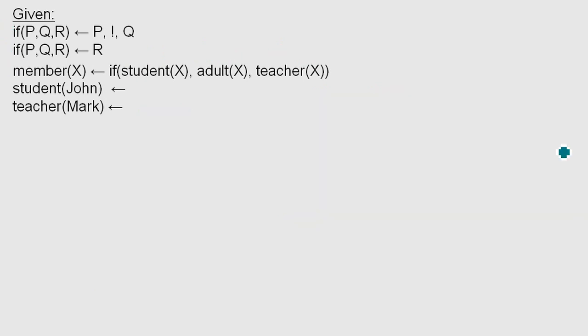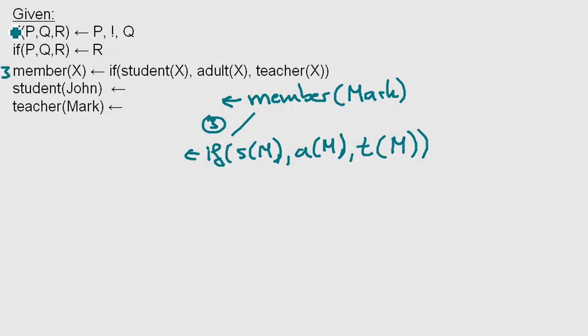Let's try the same example with Mark. We ask, is Mark a member? Once again, we apply this rule number three. And we again end up with this. Again, we now apply rule number one. And again, we will end up with the first. Then we got the cut operator. And then the middle one. Why is it the middle? Because the middle is going to be here.